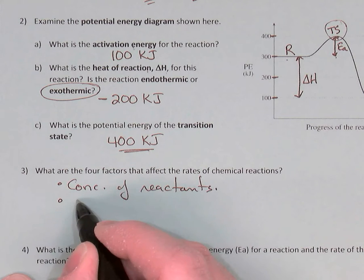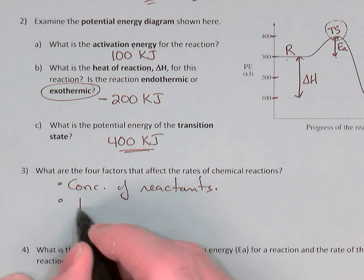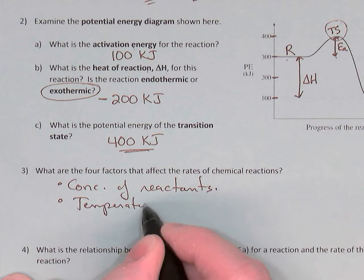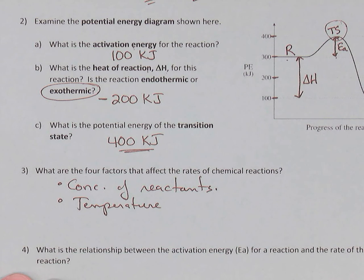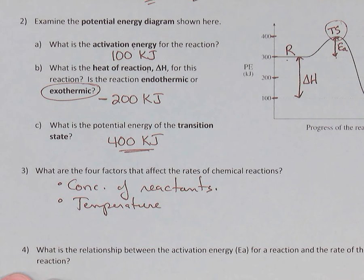Second factor: you can change the temperature of the system. If you increase the temperature, this will increase the average kinetic energy of the particles in the container. With more kinetic energy they move faster, so again there'll be more collisions — the frequency of collisions goes up — and therefore the number of successful collisions will go up and the rate increases. On top of that, if the particles are moving faster, more of the collisions will have the required activation energy, giving another reason for the rate to go up.